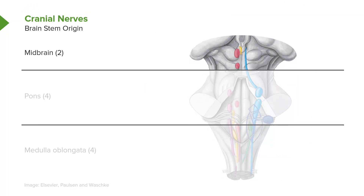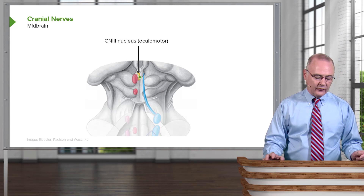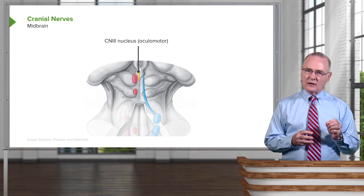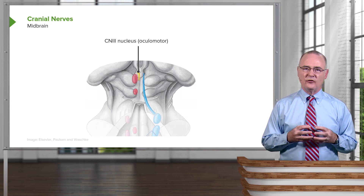The first of the two cranial nerve nuclei housed in the midbrain is the nucleus for cranial nerve three, shown here in yellow. This gives rise to the oculomotor nerve, which innervates several extraocular eye muscles, constricts the pupil, and is important for the control of lens accommodation so that we can view objects close to us.